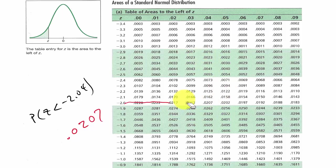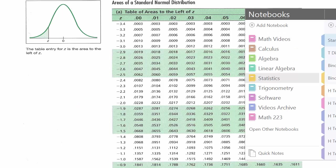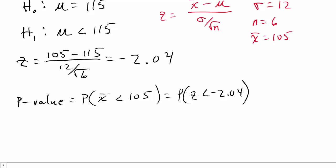Let me erase this. Let's go back to our problem. So this is 0.0207.